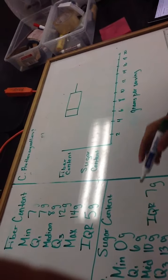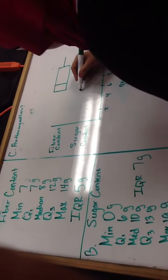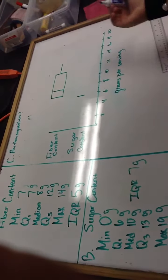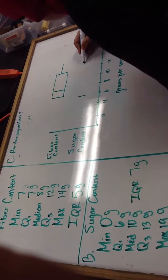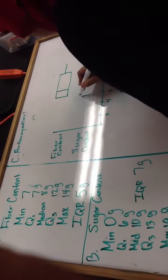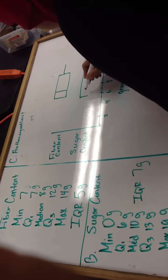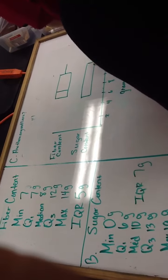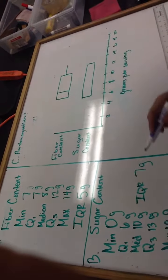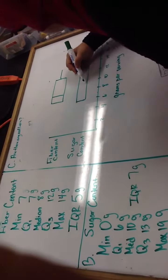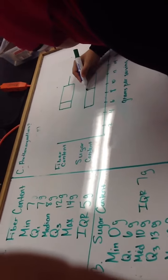Sugar content: Q1 is 6. Q3 is 13, that's about here. Draw that box. And then your median is at 10, that's about there.